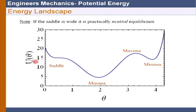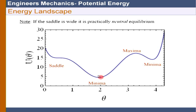We can also use a graphical approach: plot V versus θ and identify all points where the slope is zero — those are the equilibrium configurations (minima, maxima, flat). Where d²V/dθ² > 0 the equilibrium is stable; where d²V/dθ² < 0 it is unstable; where d²V/dθ² = 0 it is neutral and higher-order derivatives must be examined.